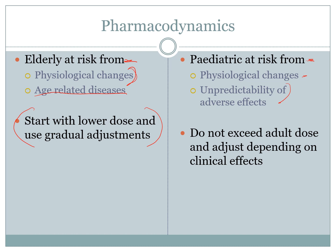Pediatric dosing is done by weight, body surface area, or even length. We never increase the dose beyond an adult dose and always adjust based on clinical effects. Even in the case of water-soluble medications like amoxicillin — 25 to 50 milligrams per kilo — if a child is large enough that that dose would exceed one gram, then you give the one gram adult dose. That is it.